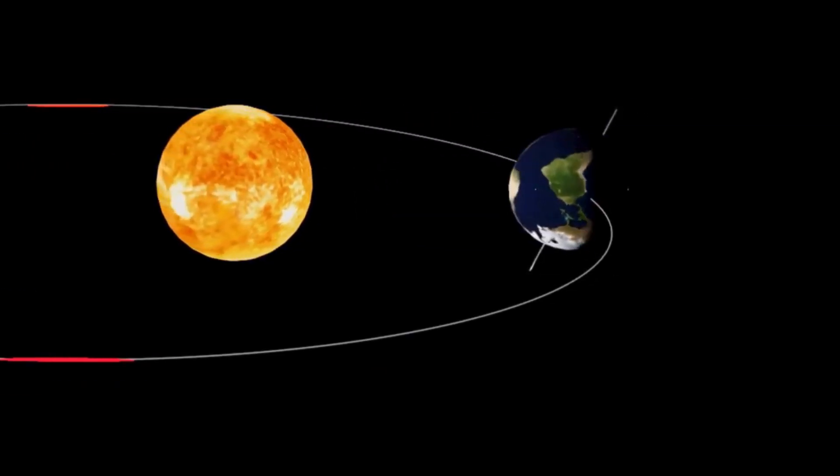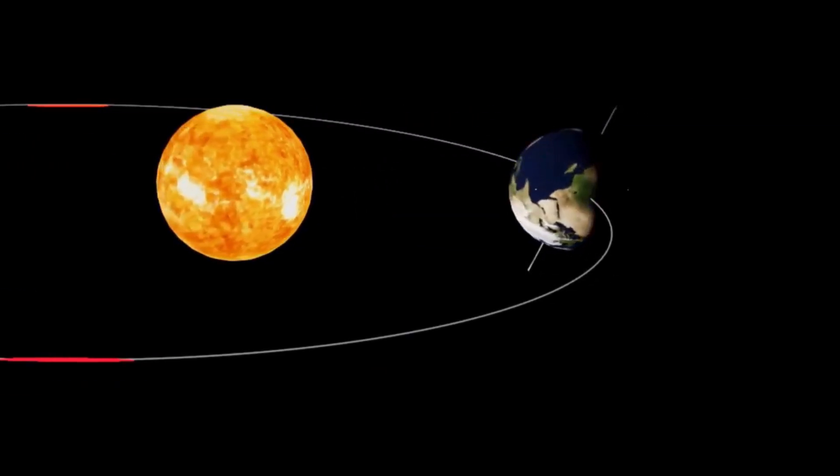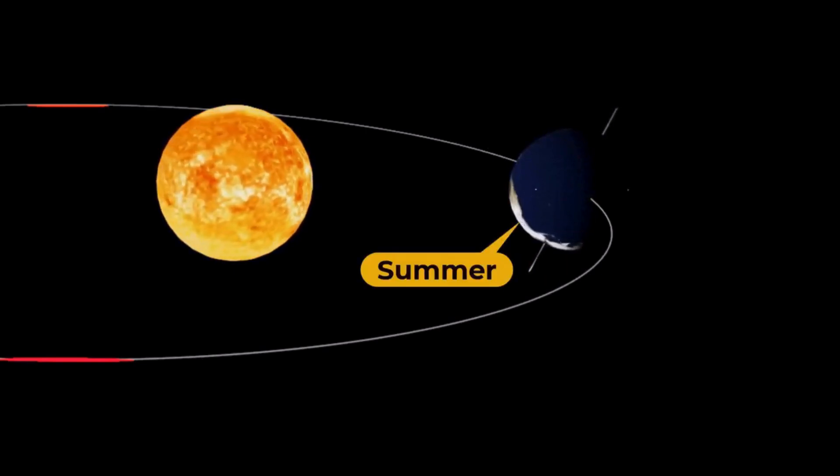Six months later, the Earth has traveled to the other side of its orbit. Now the southern hemisphere is getting more sunlight, making it summer there and winter in the northern hemisphere.